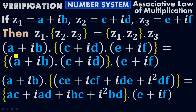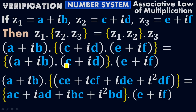Remember, this is the left side and this is the right side. By taking the product of (A + iB)(C + iD) on the right side: A times C gives AC, A times iD gives iAD, iB times C gives iBC, and iB times iD gives i²BD. Iota times iota gives i².